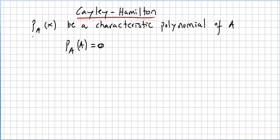In the previous video we saw what the characteristic polynomial of a matrix is. So let us call it P_A(x), the characteristic polynomial of A.